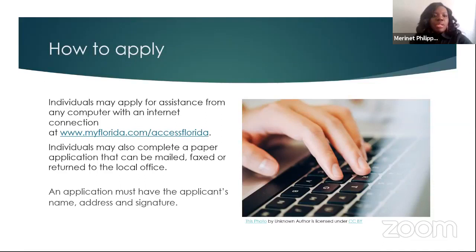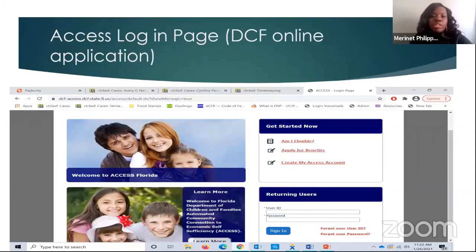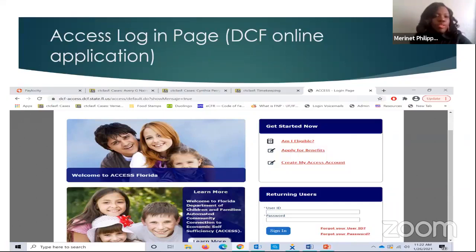To submit your application, an individual can apply online by going to www.myflorida.com/accessflorida. You can also submit a paper application that can be mailed or faxed to the local office. An application must have the applicant's name, address, and signature. This is a snapshot of the actual page where you can log in to create your application, create a username and password, complete your application, check your status, upload documents requested by DCF, and report changes. This website is available to you 24/7.